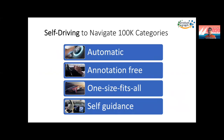The self-driving approach has four features. First, it's automatic — we use machine learning models to leverage the data itself. Second, it's annotation-free — we use distant supervision and semi-supervision to remove the burden of annotation. Third, one-size-fits-all — we use transfer learning to build one big model that can face multiple different domains. Fourth, self-guidance — we look at customer behavior data and try to discover new types, new concepts, and new attributes by itself.